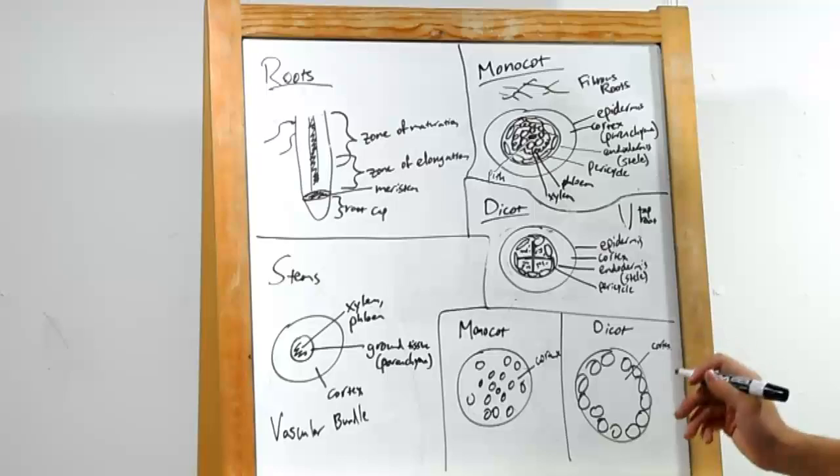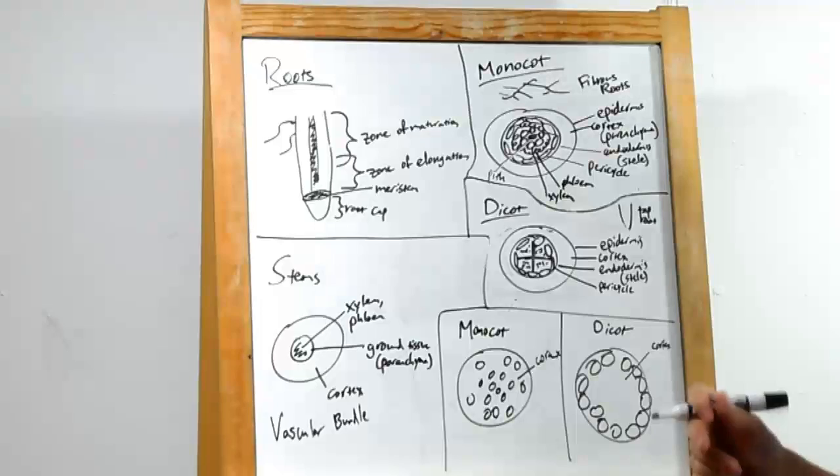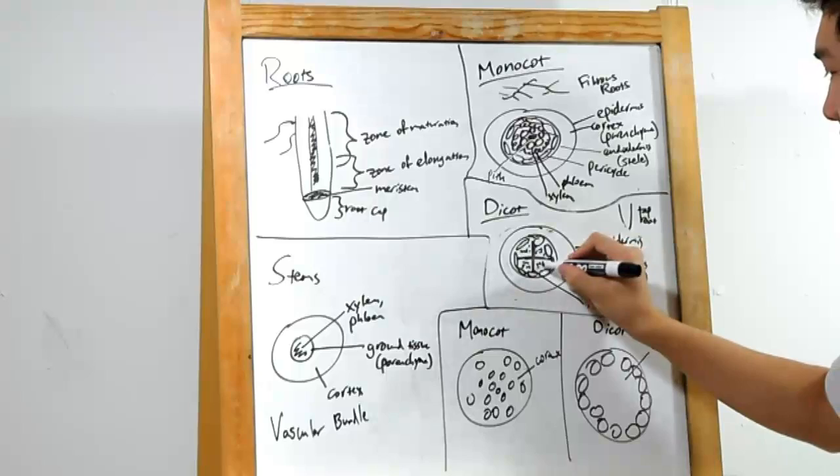See, instead of xylem being arranged in a ring around the center like it was in the monocots, it's arranged in a cross. And everything else that is not xylem is going to be phloem.